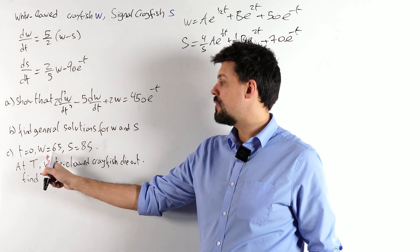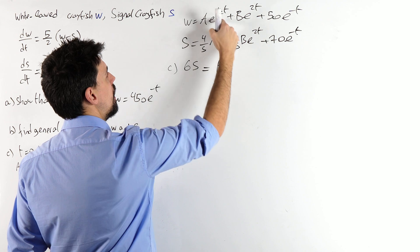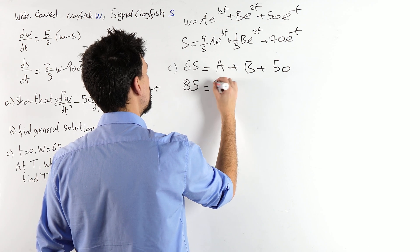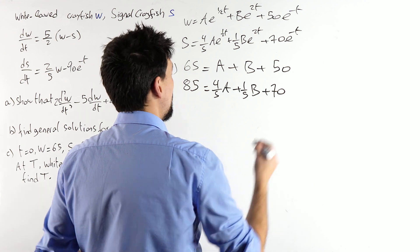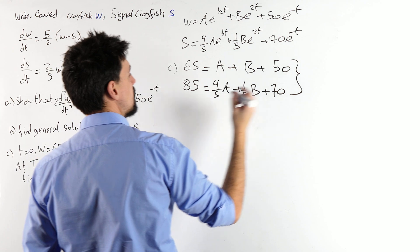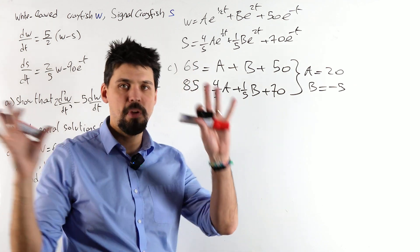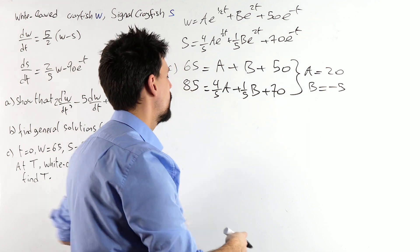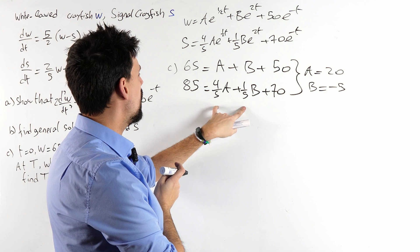We've got initial conditions, so let's find A and B. W = 65 when t = 0: all the exponentials become 1, giving A + B + 50 = 65. And S = 85 when t = 0 gives (4/5)A + (1/5)B + 70 = 85. Solving the simultaneous equations: A = 20 and B = −5. Checking: (4/5)(20) + (1/5)(−5) = 16 − 1 = 15. Yes, that works.